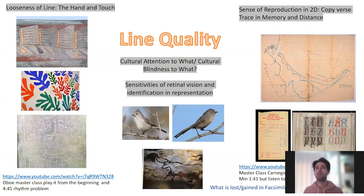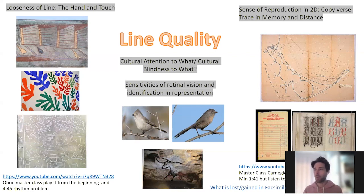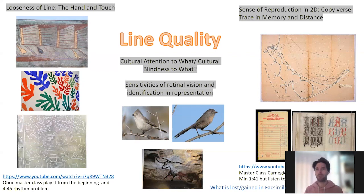Line quality is something that changes — our appreciation of it, our sensitivity to it, changes over generations and due to different cultural needs. We can pay attention to different qualities of line. In the age of reproduction, the age of the simulacra, when things get redone over and over again, how do we think about line quality? On the internet, a reproduction gets a little fuzzy, then cleaned up, then flipped — what kind of sensitivity is lost versus gained?